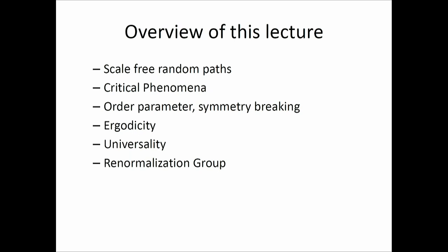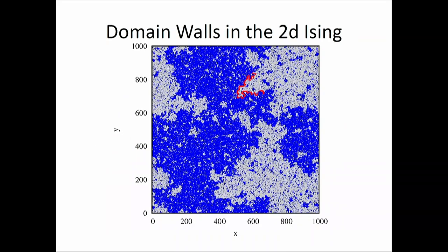Today I'm going to talk about scale-free random paths, critical phenomena, order parameter, symmetry breaking, ergodicity and breaking of it, universality, and the renormalization group. Hopefully today's lecture is completely familiar. Let's start.